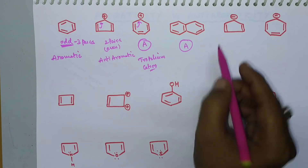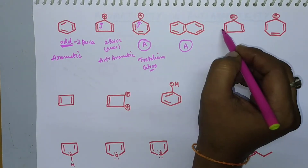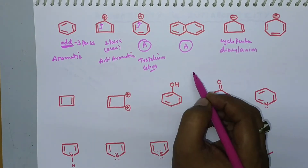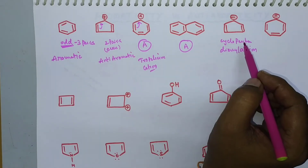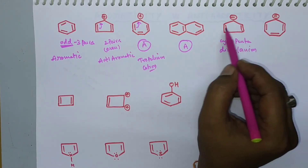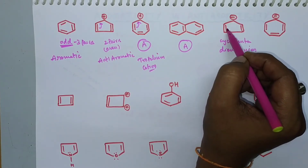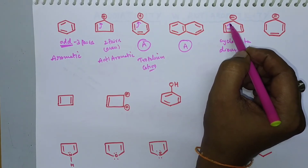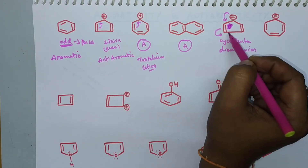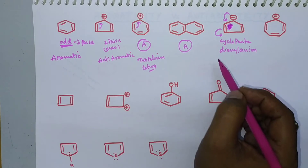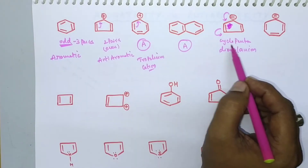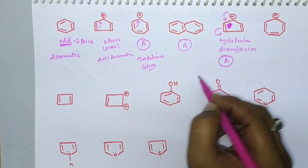The cyclopentadienyl anion has two π bonds giving two pairs, but the negative charge also involves in delocalization — the lone pair shifts into the ring. Including this lone pair, there are three electron pairs total, which is an odd number, so cyclopentadienyl anion is an aromatic molecule.